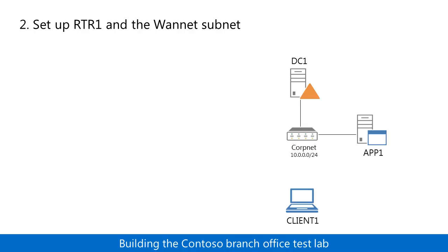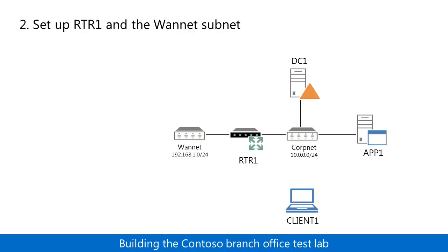In step two, you add the WANnet subnet and install and configure RTR1, a computer running Windows 7 or Windows 8, whose sole function is the routing of IP packets between the corpnet and WANnet subnets. RTR1 is not made a member of the corp.contoso.com domain.